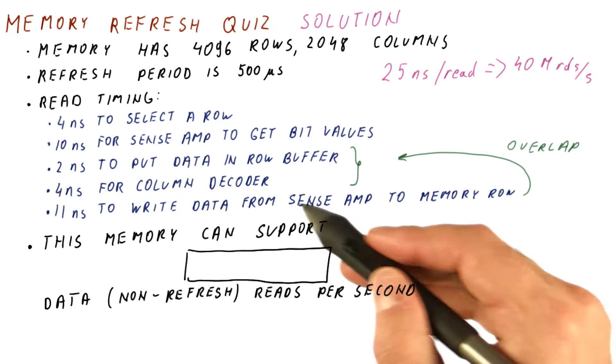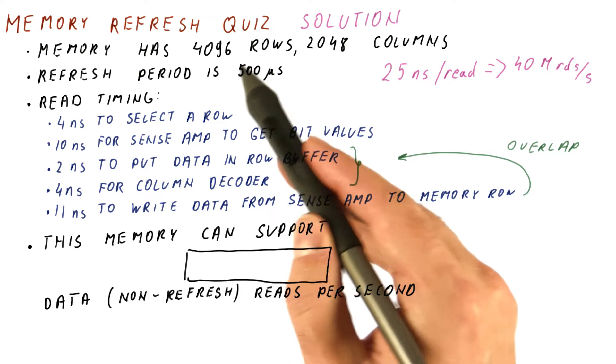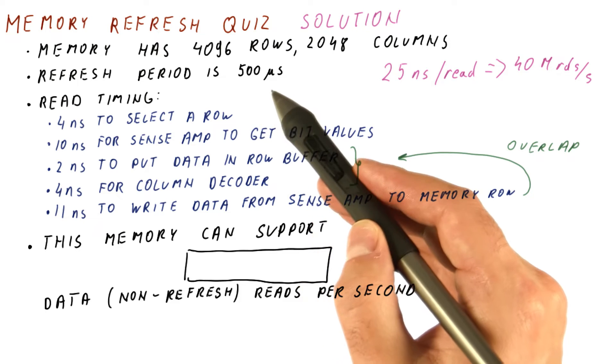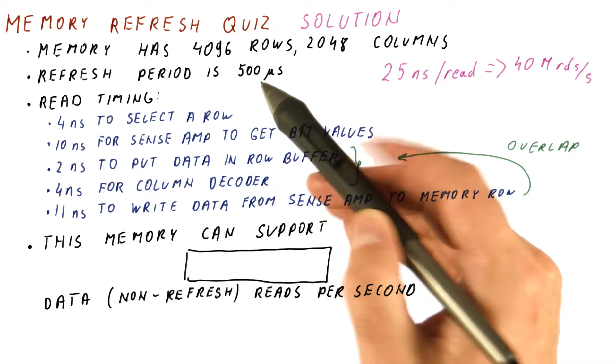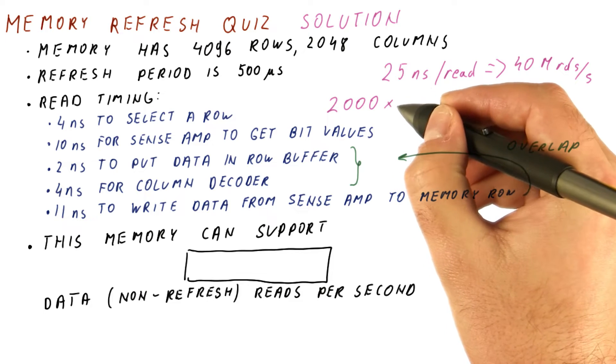And this is where it becomes tricky, because during a second, we need to do a number of refreshes. The refresh period is 500 microseconds. So the number of refreshes we have to do is 2,000 times per second.